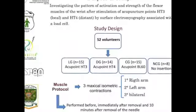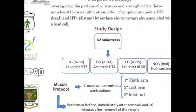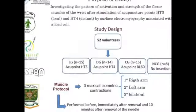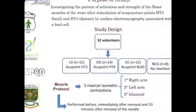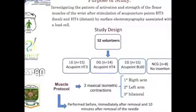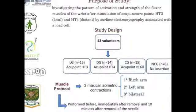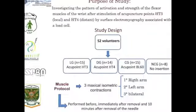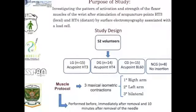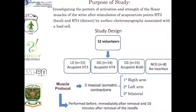Our study aimed to investigate the patterns of activation and the strength of the wrist flexors muscles following stimulation of acupuncture points. 52 volunteers were randomly allocated in four groups: needle insertion and stimulation at Heart 3, a local group; Heart 4, a distant group; Bladder 60, a control group; and a naive control group composed of volunteers not stimulated by needle insertion.